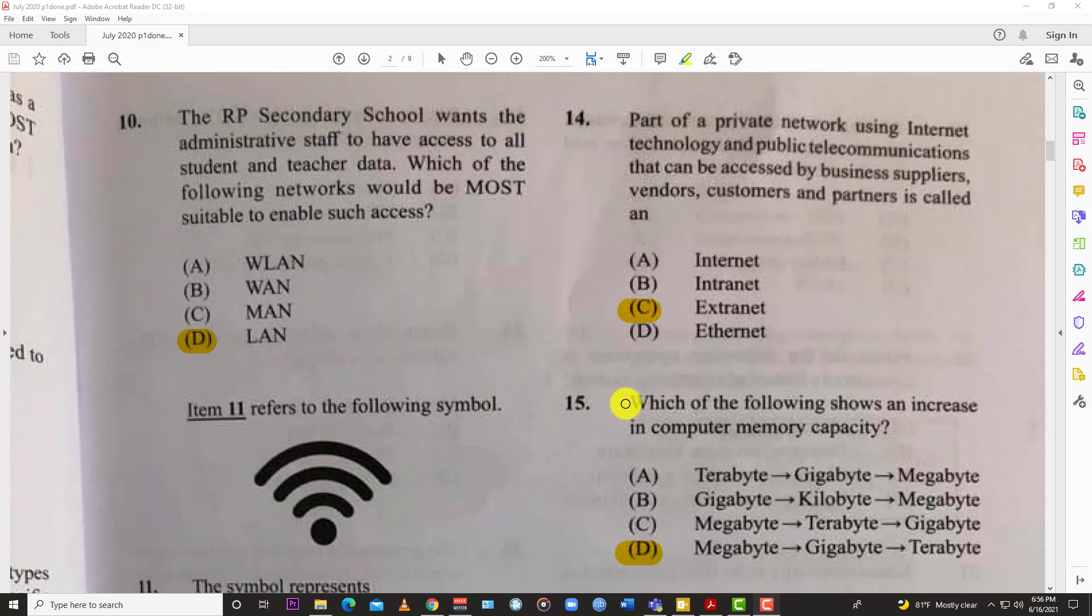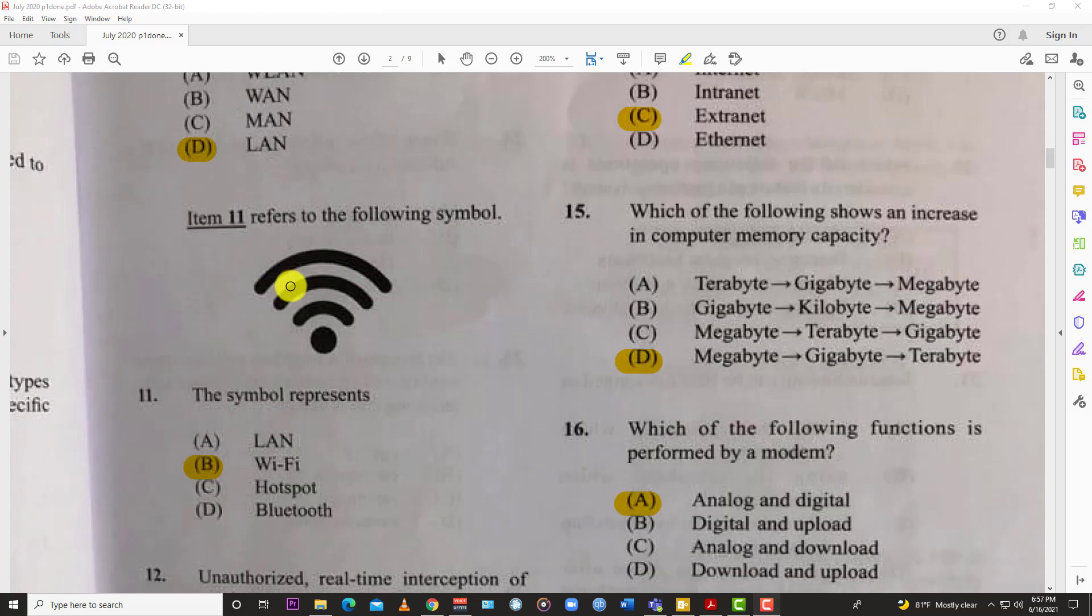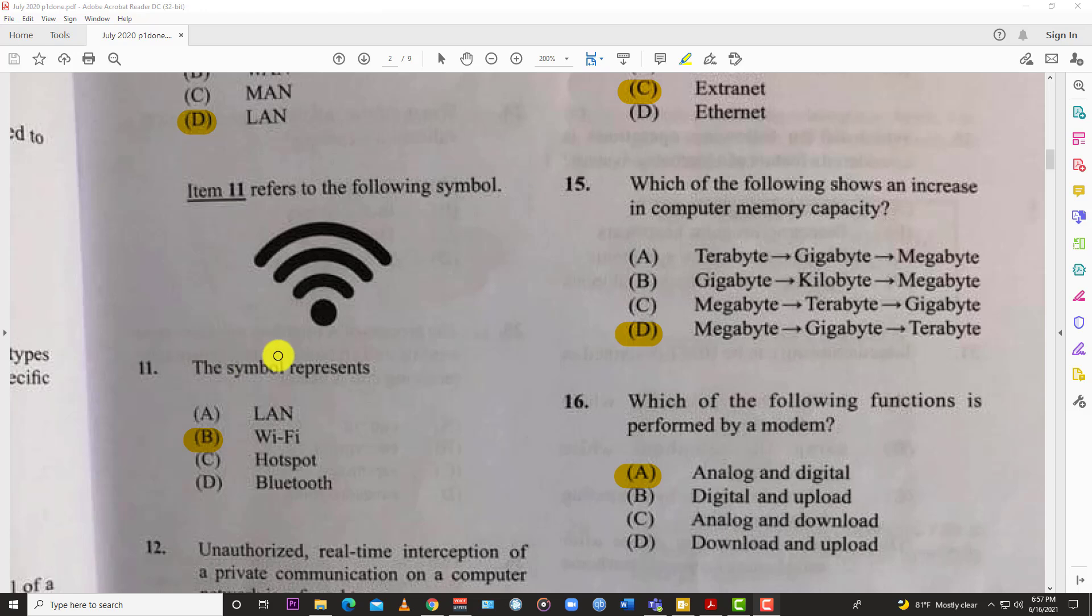Number ten: the RP secondary school wants the administrative staff to have access to all the students' data. Which of the following networks would be most suitable to enable such access? The best answer is a local area network, LAN. That means anybody with access to the LAN can log on and get access to whatever MIS or database system they have installed. Number eleven: the symbol represents Wi-Fi - you see that on your computer and on your phone.